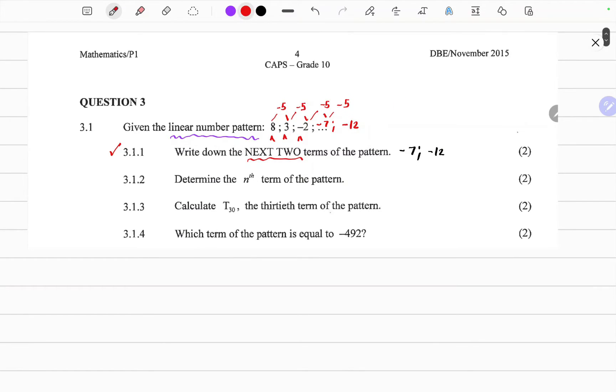The second question, determine the nth term of the pattern. In other words, they want us to find Tn. To answer this question, we should know the general formula for any linear pattern. And the general formula for any linear pattern is Tn equals Dn plus C, where D is the first constant difference, Tn is the term, and n is the position of the term.